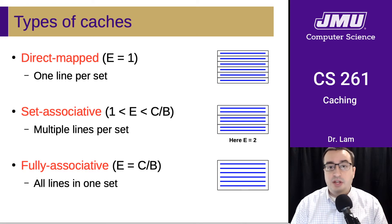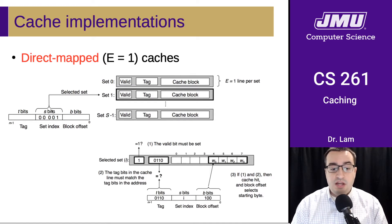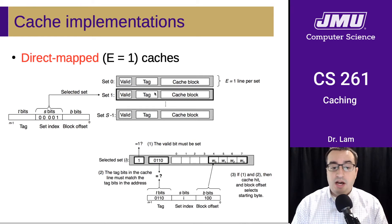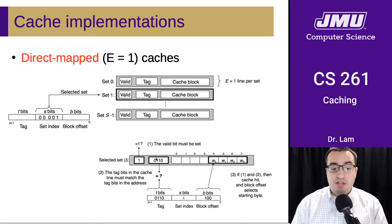In the fully associative case, you basically don't have to do a set lookup. In the direct mapped case, we take the address and split it into the tag, the set index, and the block offset. We use the set index to look up the set that this particular address maps to. There's only going to be one line inside of that set because there is one line per set specified by E. This means we can immediately go to the set that corresponds to this address, and then we just need to check the tag to make sure it matches the tag of the address we're trying to look up.